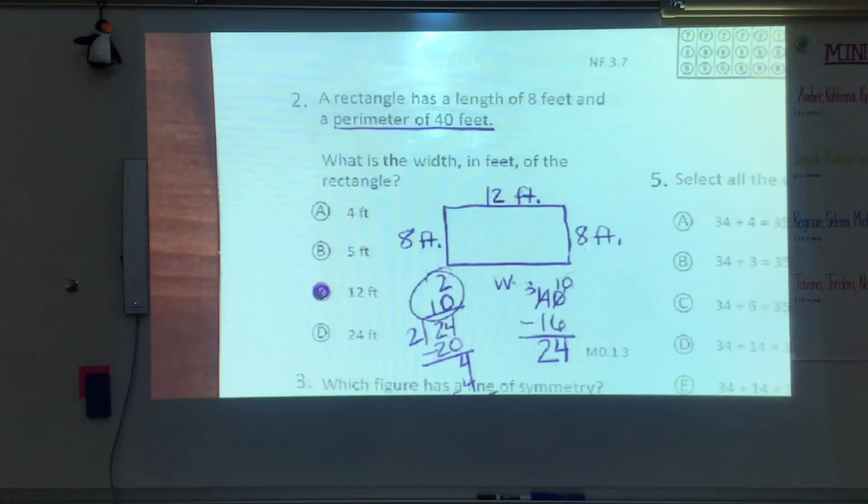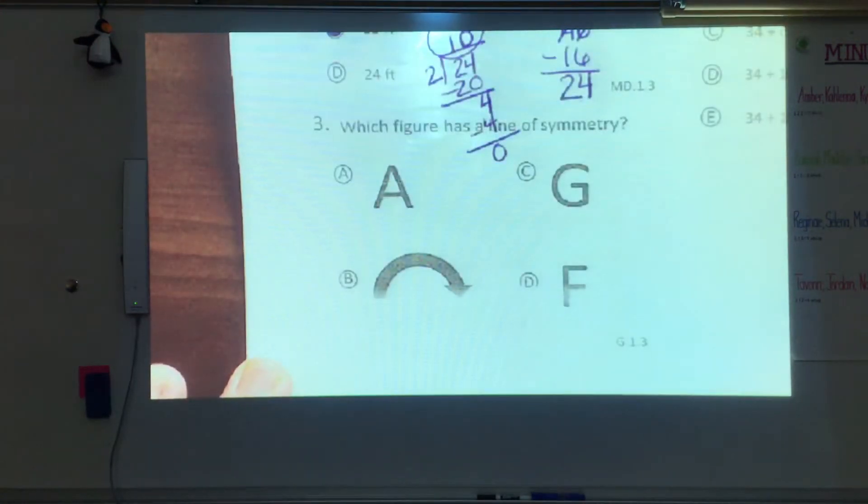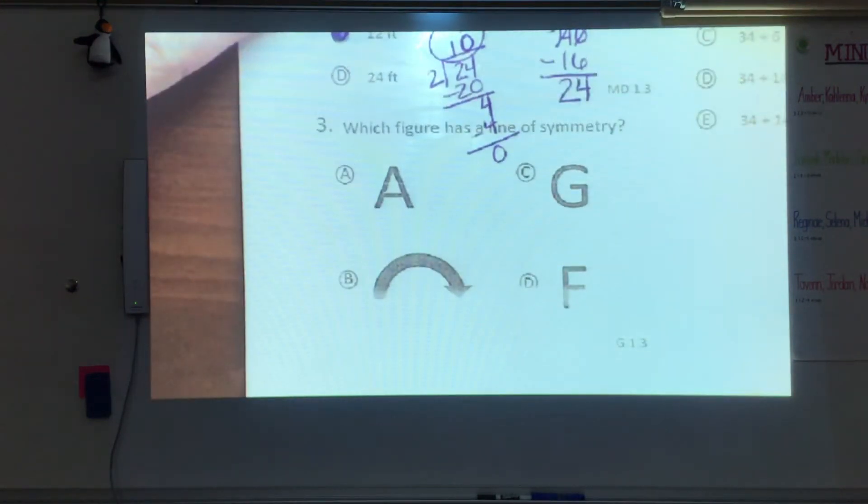Okay. Sorry it keeps shaking on you. Alright number three. Which figure has a line of symmetry? Symmetry means we can split it down the middle and it looks the same both ways. Now you can either do a vertical line of symmetry or horizontal line of symmetry.